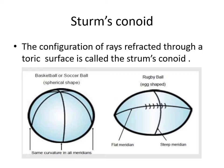All meridians — 30°, 90°, 60°, 45°, all 360° meridians — will have the same curvature. But if you look at a rugby ball, the shape is egg-shaped, meaning the curvature is different. If it is more curved, you call it a steep meridian; if it has a smaller curve, you call it a flat meridian.